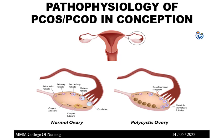Without the ovum being released into the fimbria, conception will not occur. This is why women with PCOS and PCOD have difficulty getting pregnant — the secondary follicle is not converted into a mature follicle, development is stopped due to various reasons, and therefore the woman is unable to conceive.